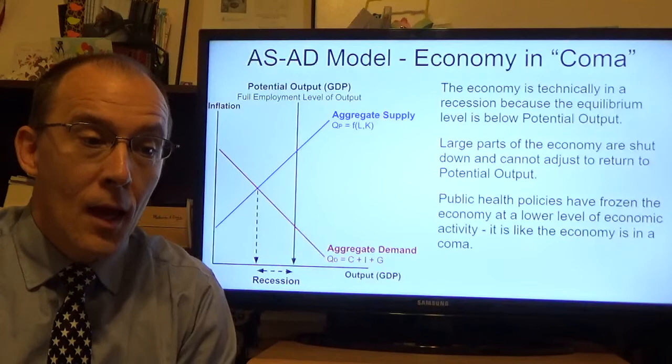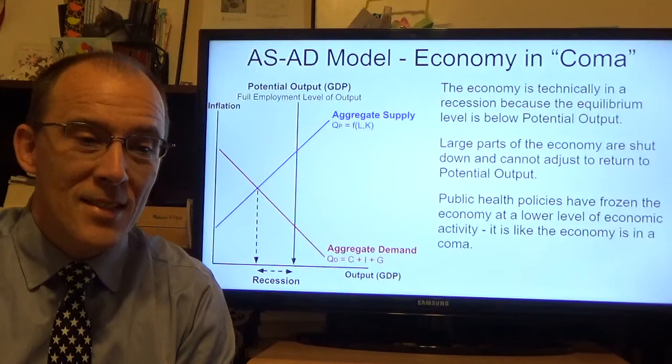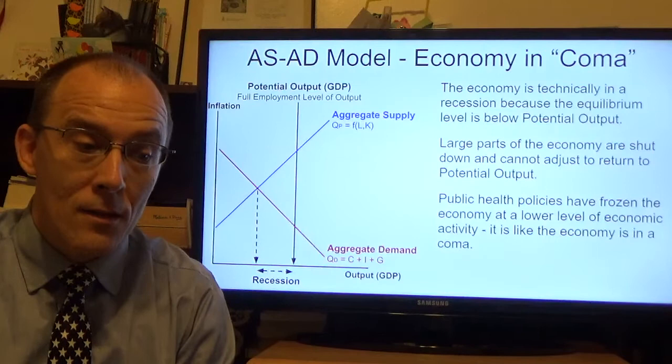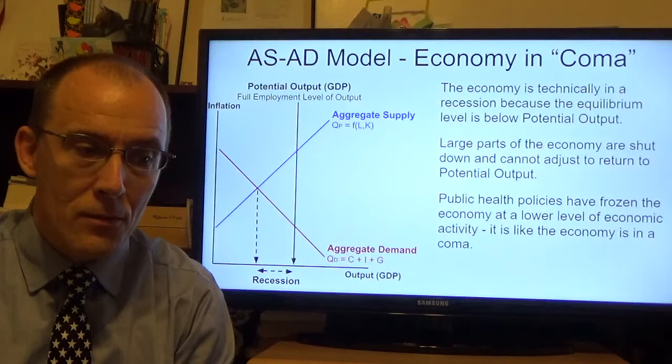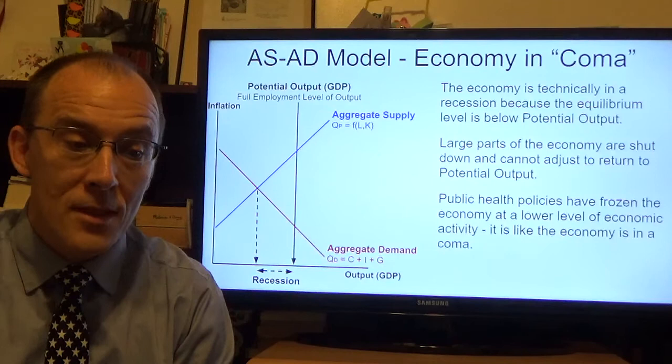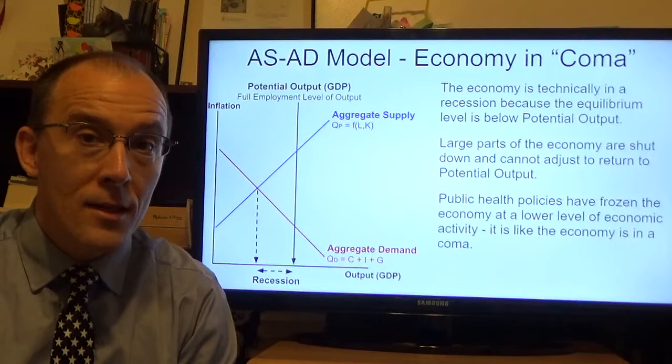The way to understand where the economy is now is that it has, in essence, fallen into a coma. We are technically in a recession because the intersection of aggregate supply and aggregate demand — our real output level — is below its potential. We have an awful lot of resources not being used right now because they can't be used. This recession is really the result of the public health policies that have frozen the economy at a lower level of economic activity.